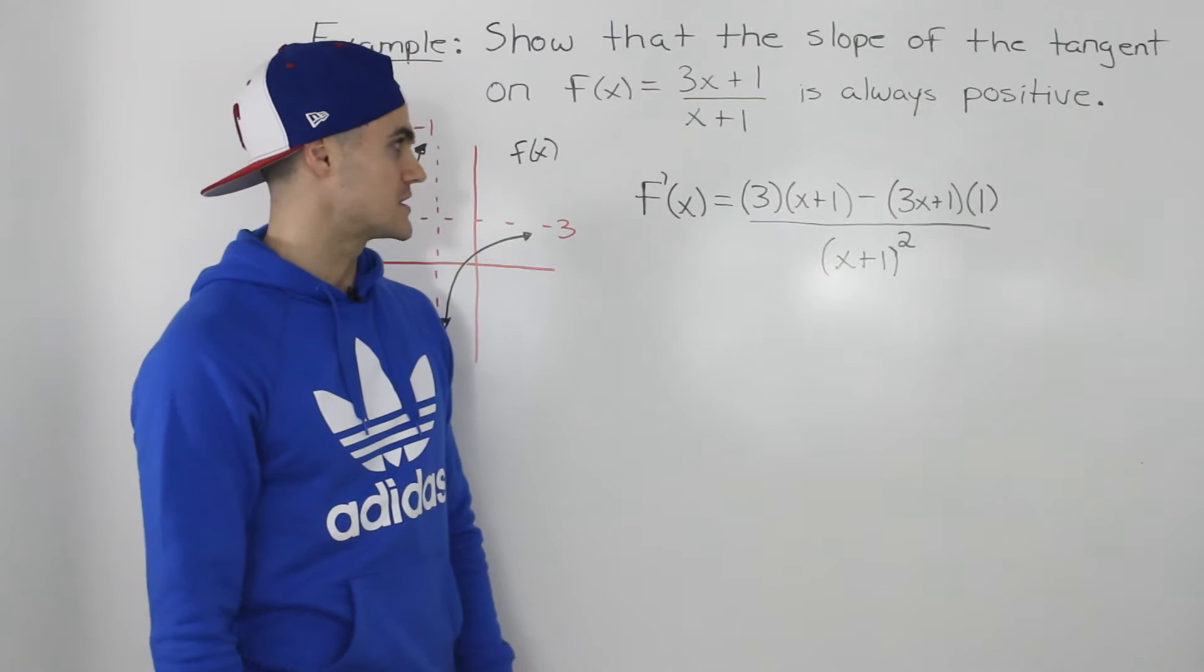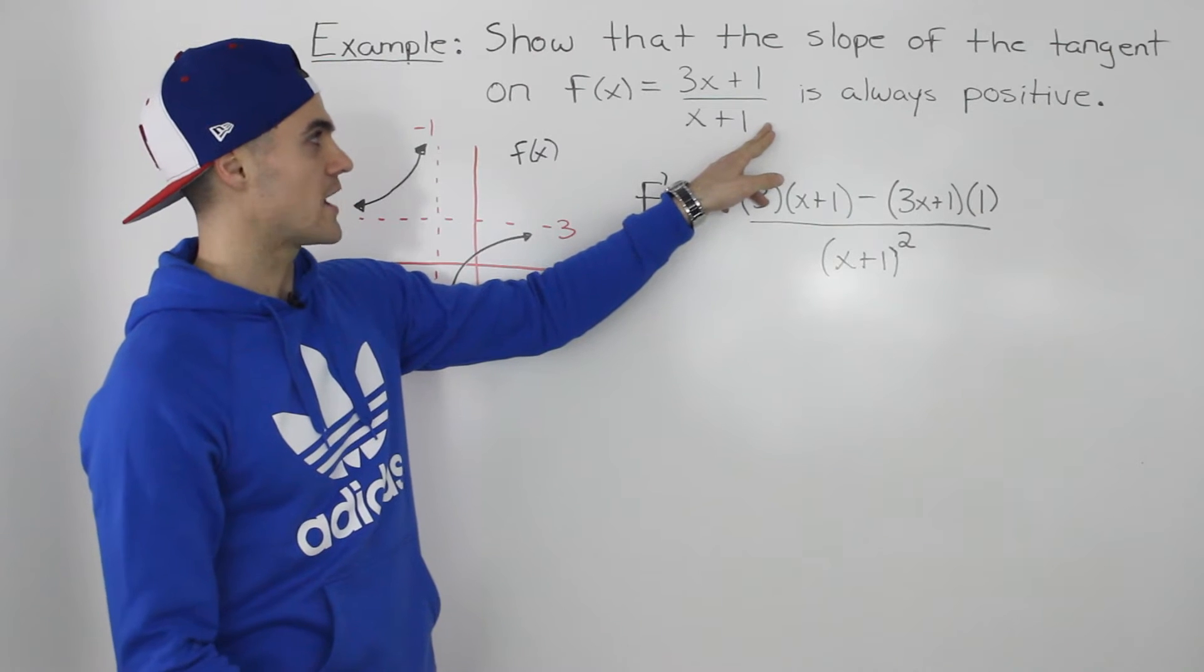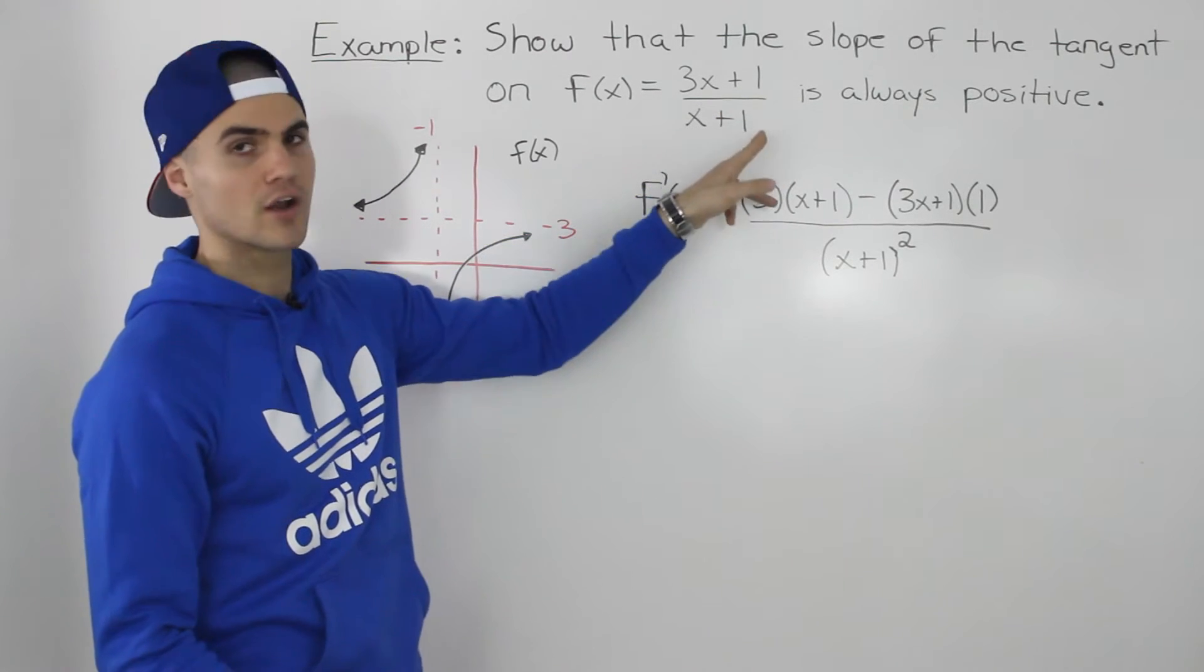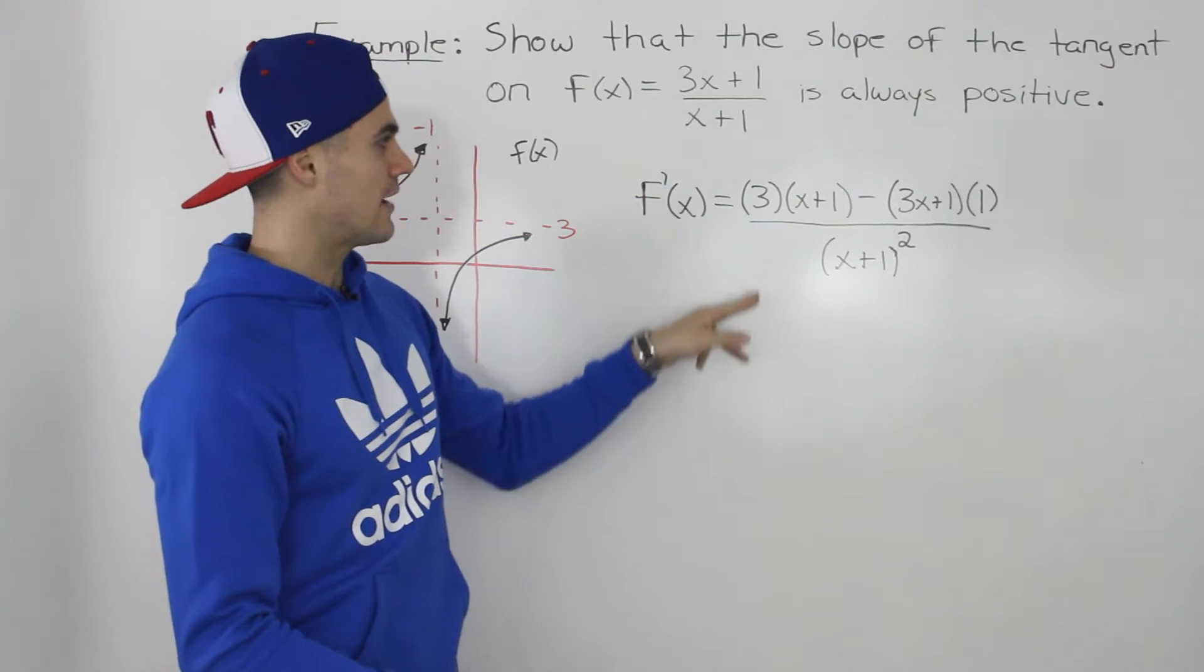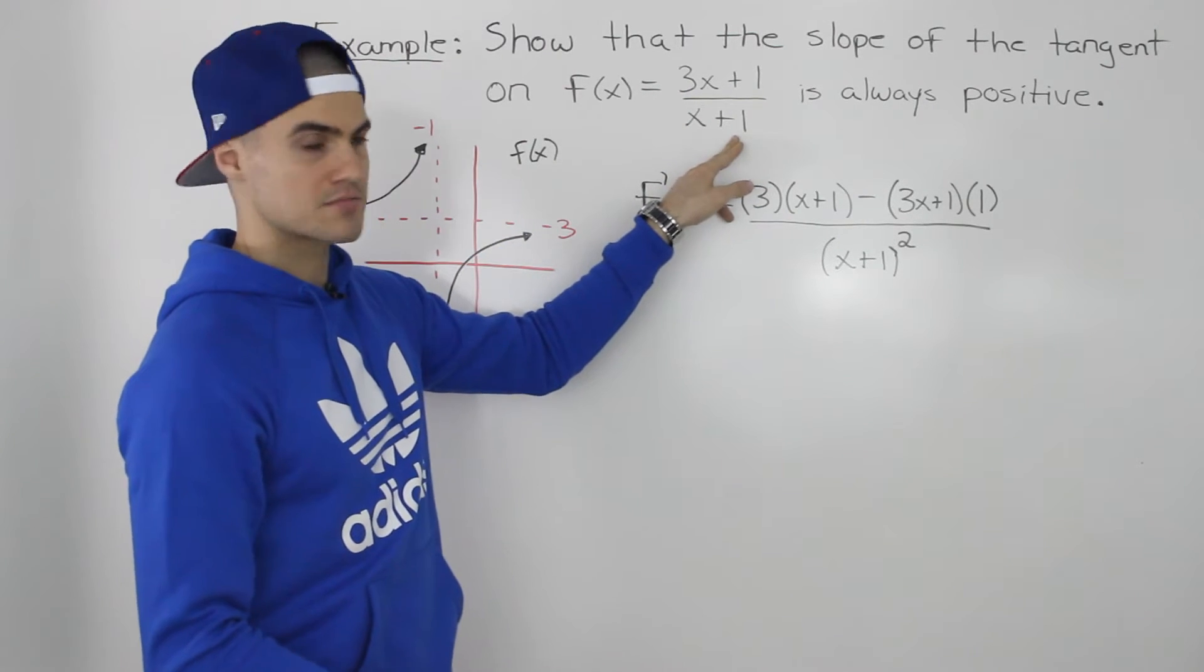So let's see what happens when we take the derivative. We can find the derivative using the quotient rule, because it's a rational function, one function over another function. So to do that, we would take the derivative of the top function, which is just 3, times the bottom function, x+1,